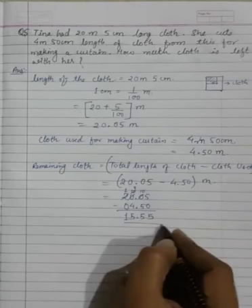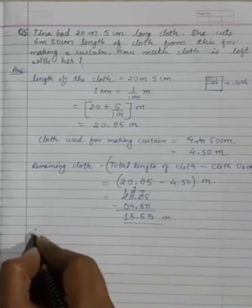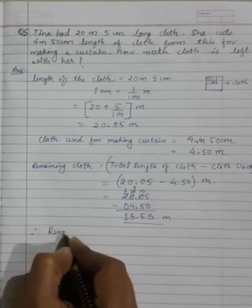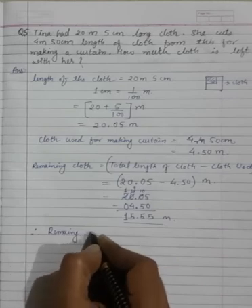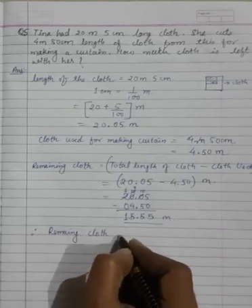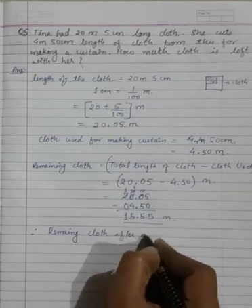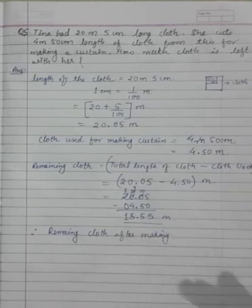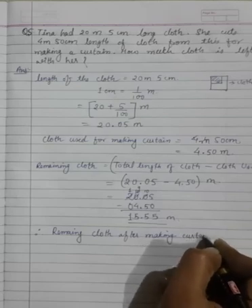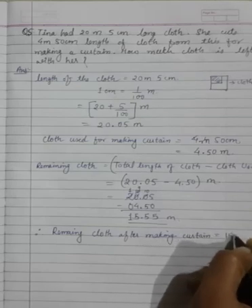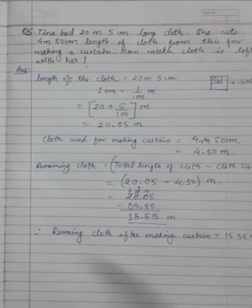So the correct answer for this question will be, therefore the remaining cloth after making curtain is equal to 15.55 meters.